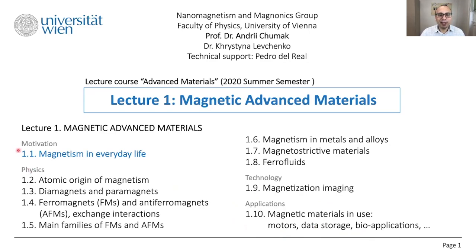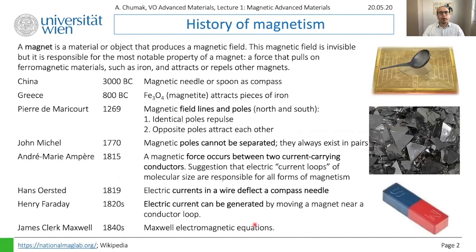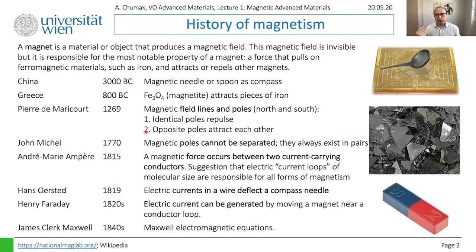Now let us come to magnetism in everyday life, starting with the history of magnetism — for two reasons. First, it will help you understand how physical discoveries happen. If you put yourself in the position of a physicist from those times, it's much easier to understand the physics because you appreciate how the researcher was thinking.